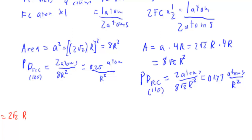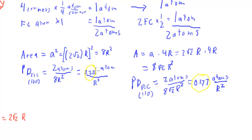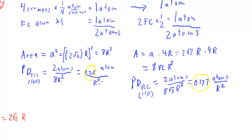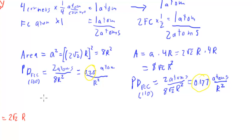Comparing the two planes: the 100 plane has a coefficient of 0.25 and the 110 plane gives 0.177. So 0.25 > 0.177, meaning the 100 plane has more atoms per square unit than the 110 plane. If we use the same material, looking at the 100 plane exposes more atoms than looking at the 110 plane.